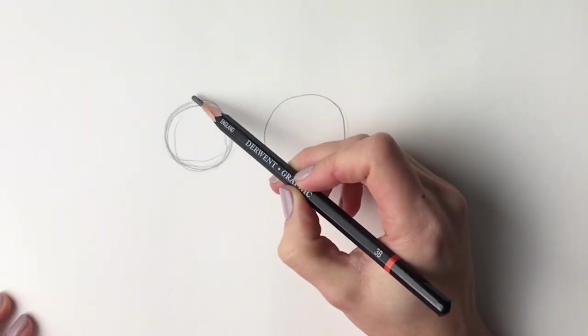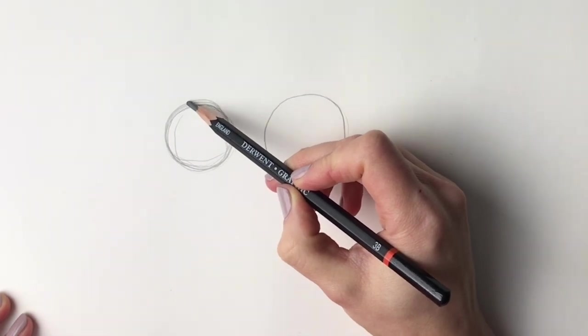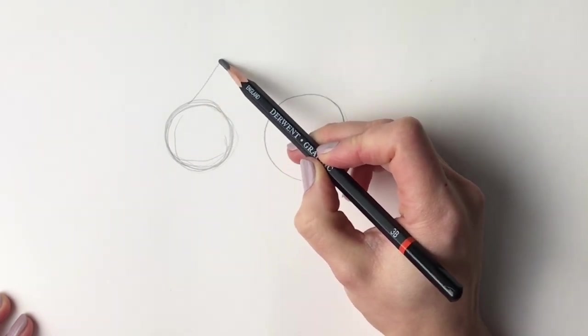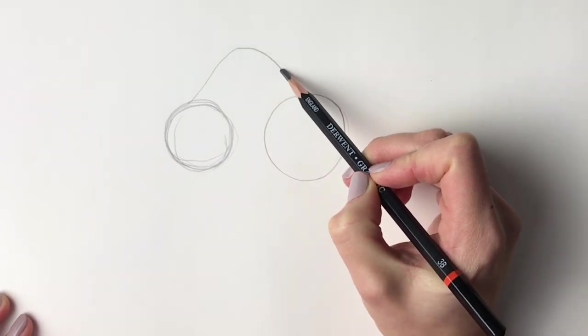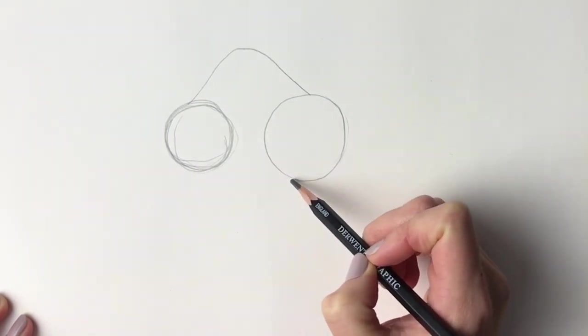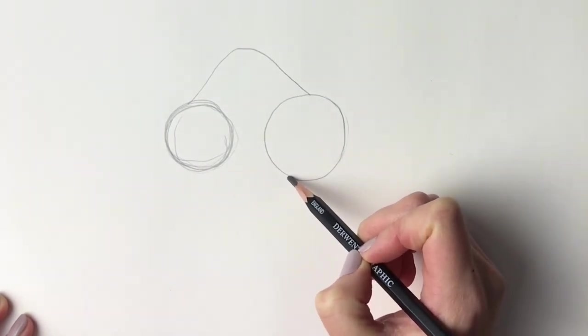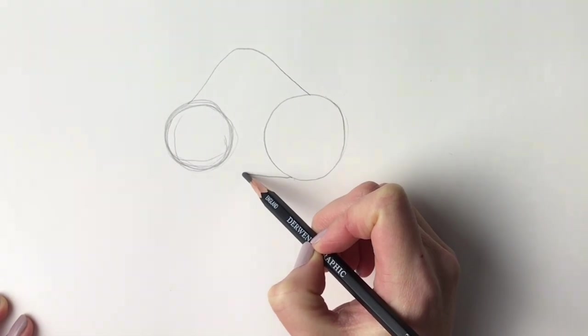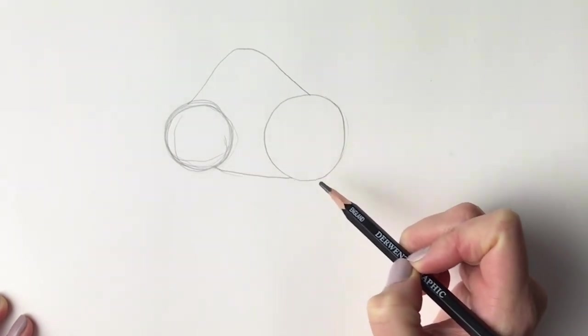Now we're going to draw the camel's hump. So just draw a line coming up here and then it comes down here. Next, we're going to draw the underside of the belly. So from about here, we're just going to draw a line coming up to hit the other circle, just like that.